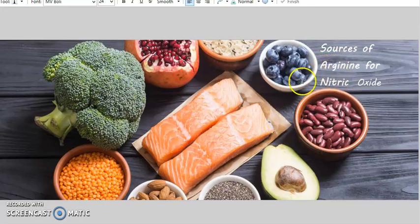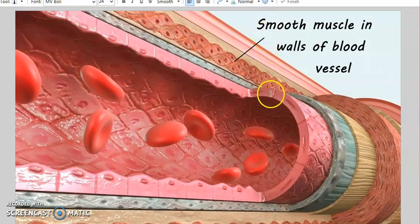Let's look at this cutaway of a blood vessel. There's muscles along the blood vessel walls, and nitric oxide is going to cause those muscles to relax.